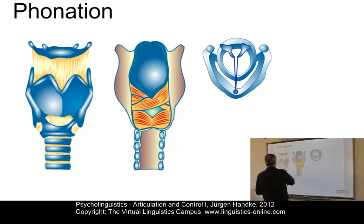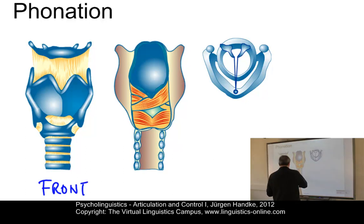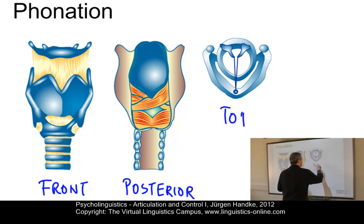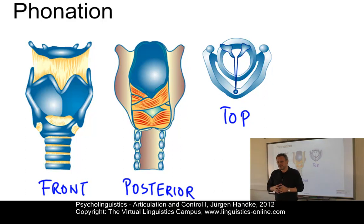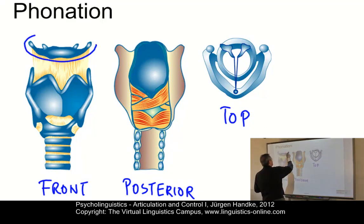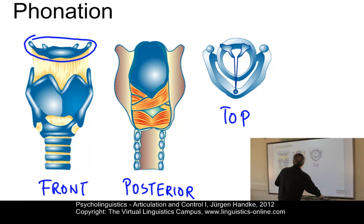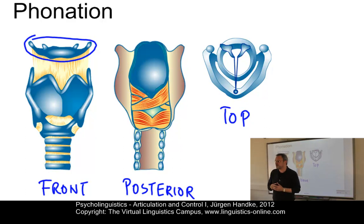Here are three views of the larynx. This view looks at the larynx from the front. This is a view from behind — the so-called posterior view. And here we're looking at the larynx from above, the top view. In looking at the larynx, we have a number of important elements. For example, we have the hyoid bone, which can only be seen from the front. This horseshoe-shaped hyoid bone serves as the basis for the tongue. It's a very important bone also for considering the evolution of human language.